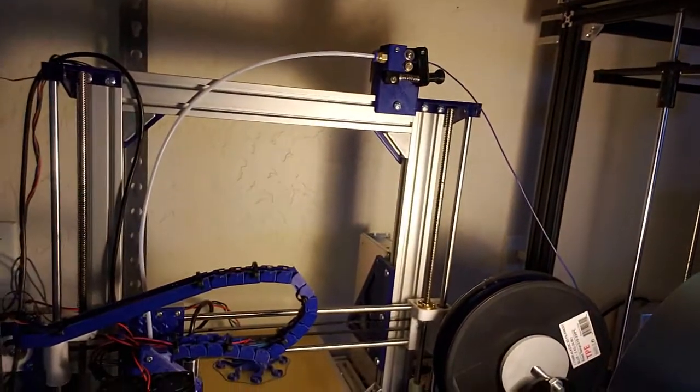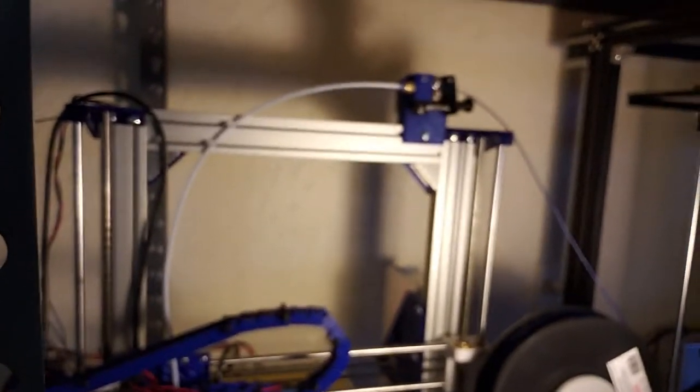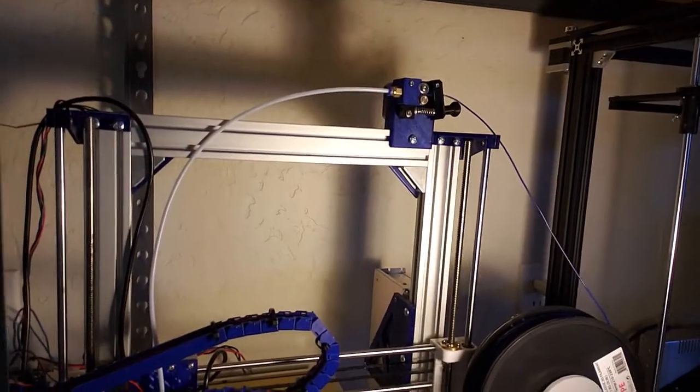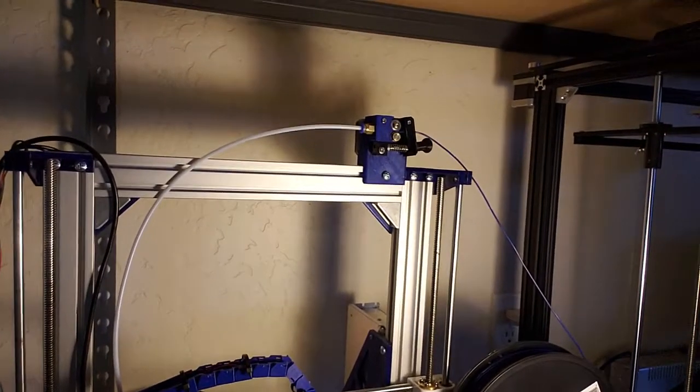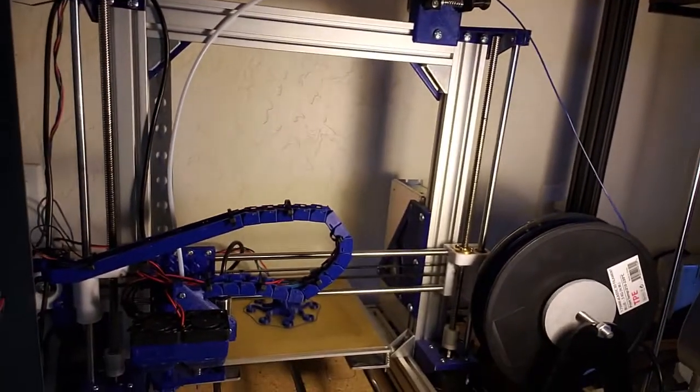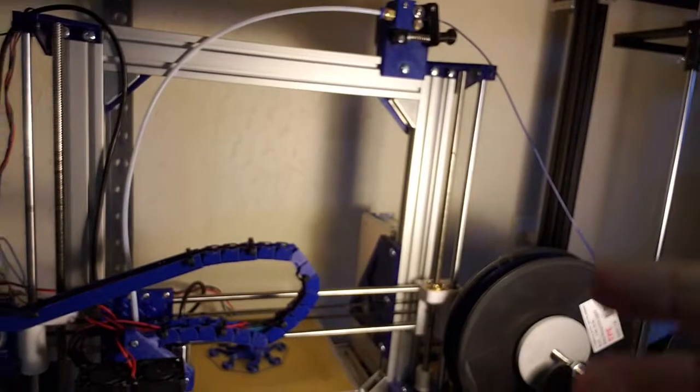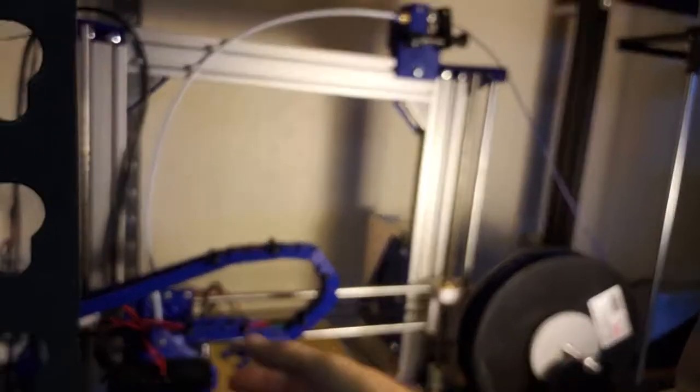I just printed something—I haven't even taken it off the build plate yet. I want to show you what I printed and how I did it with a Bowden-style printer. This is my heavily modified Anet A8. It started as an Anet A8, now it's an AM8 with an E3D V6 hotend and custom setup.